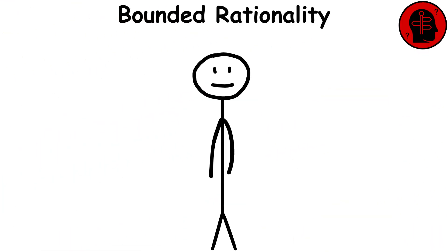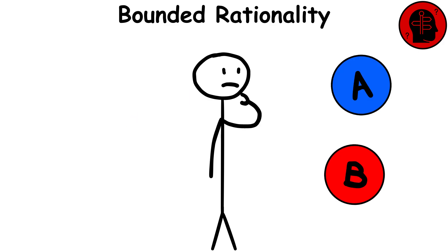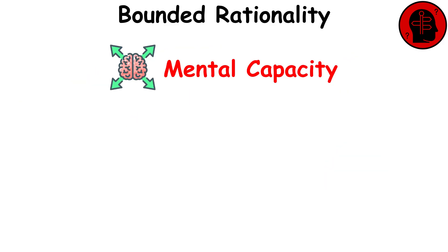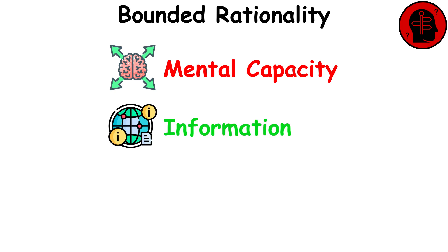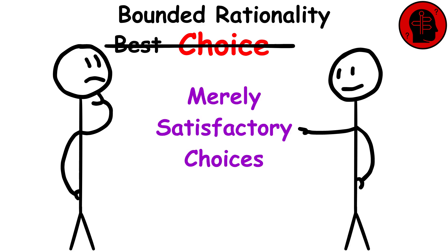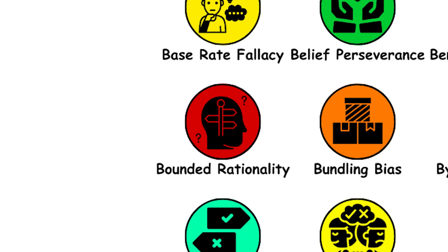Bounded rationality. This describes the way that humans make decisions that depart from perfect economic rationality. Since we are limited by our mental capacity, the information available to us, and time, instead of striving to make the best choices, we often settle on making really satisfactory choices.